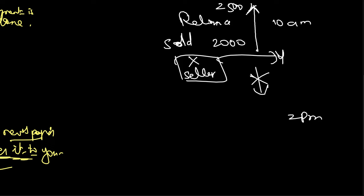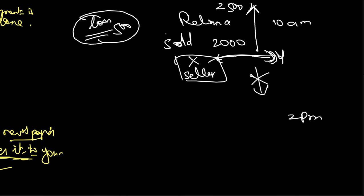In this case, you still have a commitment to deliver Reliance shares. So you are forced to buy the share at 2,500 and you incur a loss of 500 rupees. The market did not go as per your prediction — you expected Reliance to come down, but it went up. To fulfill your commitment, you buy at the higher cost of 2,500 and make a loss of 500.